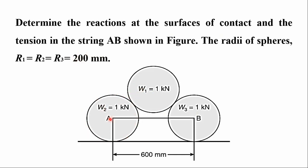The radius of all three spheres is 200 mm. We are asked to calculate the reaction at the contact surfaces. Sphere number two is touching the horizontal surface, so a reaction develops normal to the surface, which is vertical. Sphere two is also touching sphere one, so a reaction develops normal to that surface. Sphere three is touching a surface, so a reaction develops there as well, and sphere three also touches the horizontal surface, where another reaction develops.